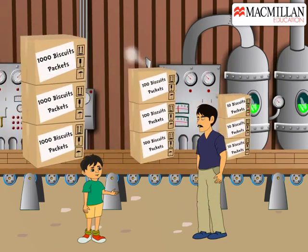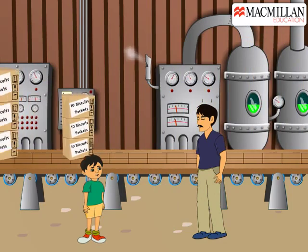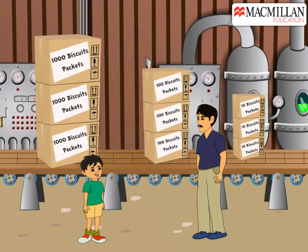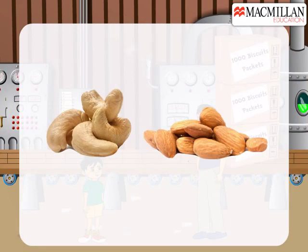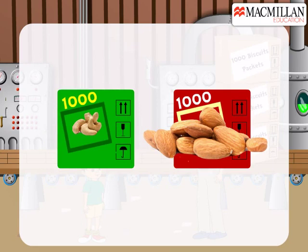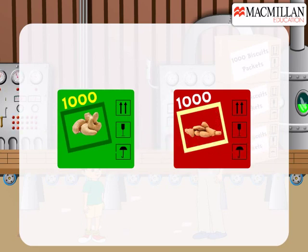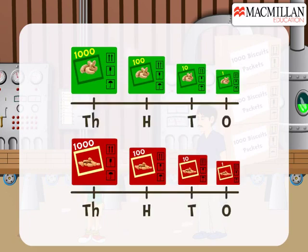That was easy! Dad, suppose there are boxes of different colours — how will we compare the number of boxes? Well, suppose there are biscuits of cashew nuts and of almonds, in different coloured cartons. Let's say green represents cashew nuts and red represents almond biscuits. We will count the number of red cartons, then the green cartons, and then compare the numbers — first at the thousands place, then hundreds, then tens, then ones.